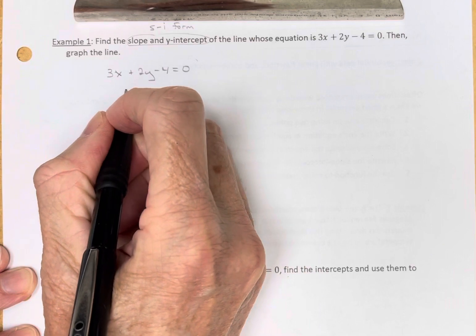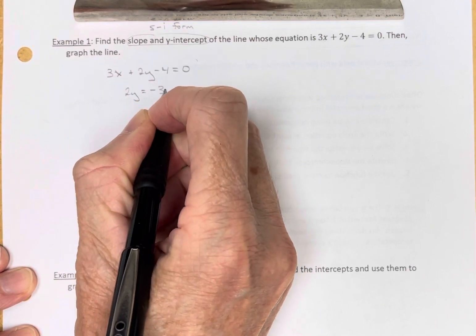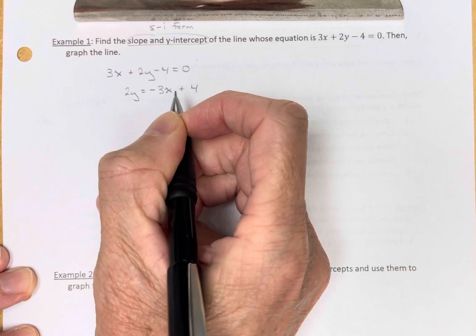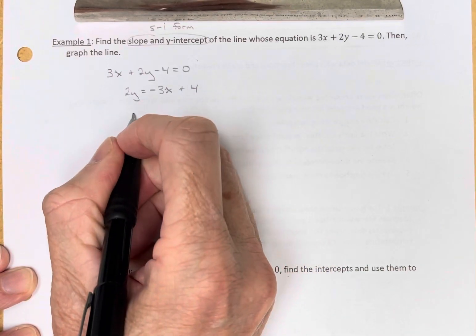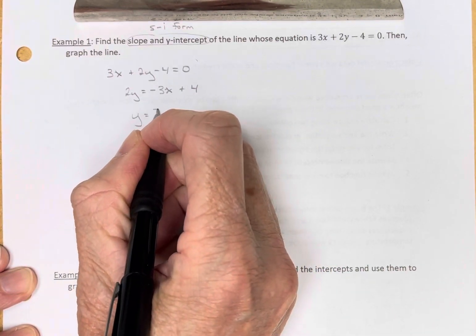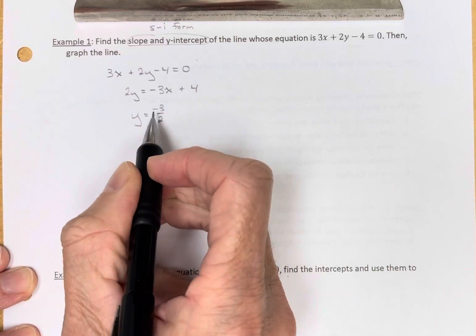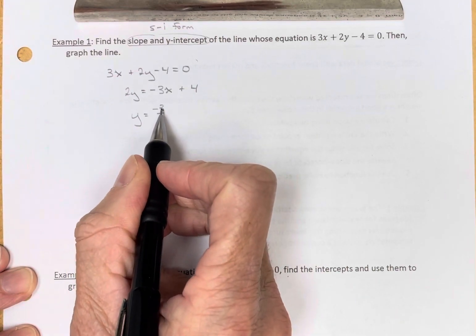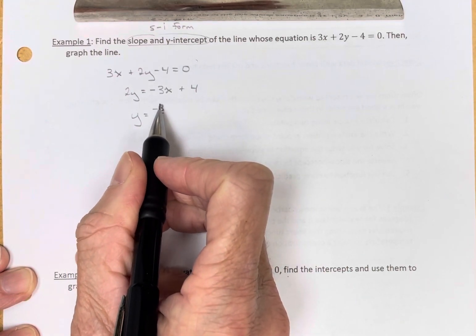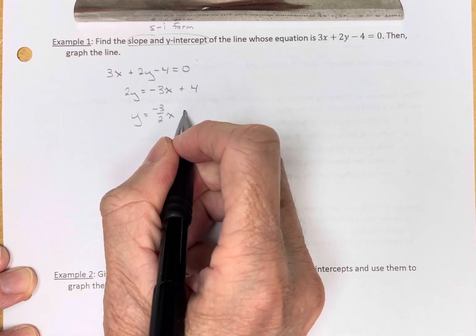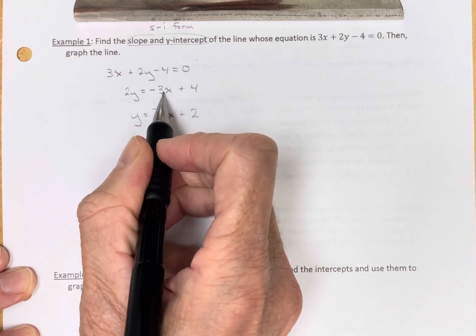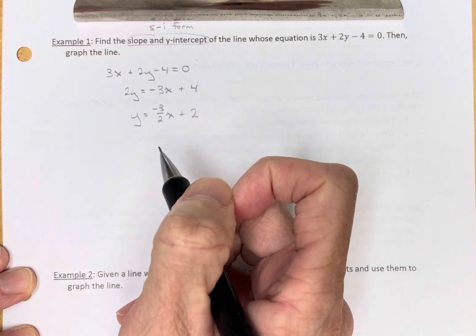So we have 2y equals negative 3x plus 4. Now I'll divide both sides by 2. y equals negative 3 halves. Notice I put the negative with the numerator, because I'm going to fall 3 times x, and this is plus 2. I divided this by 2 and divided this by 2.